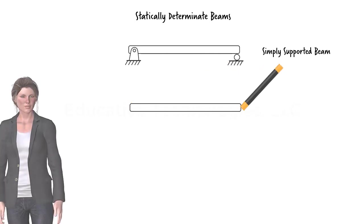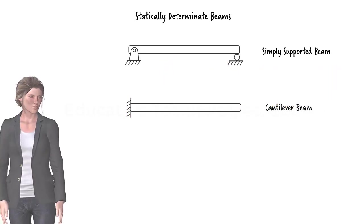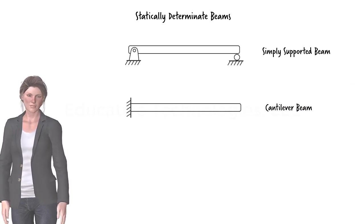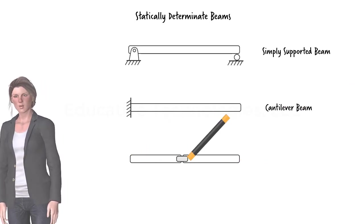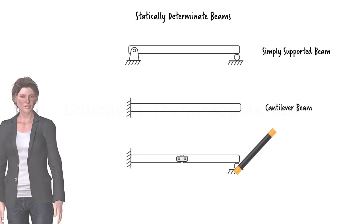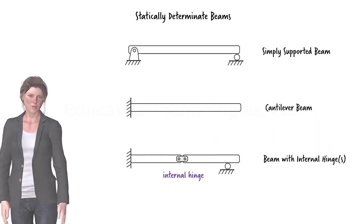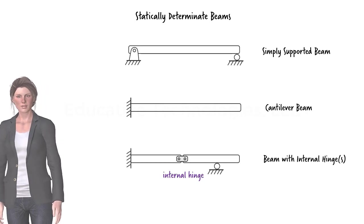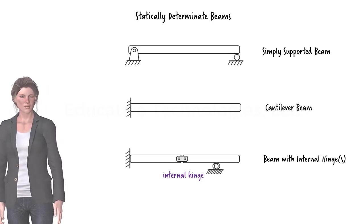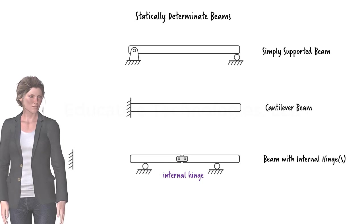A cantilever is another type of statically-determinate beam. A beam with one or more internal hinges could also be statically-determinate. This beam has one internal hinge. And here is an example of a determinate beam with two internal hinges.